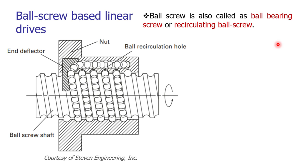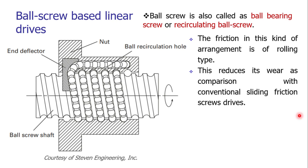Ball screw based linear drives are also called ball bearing screws or recirculating ball screws. In a typical screw and nut arrangement, we have sliding friction, which reduces efficiency. If we replace that sliding friction with rolling friction, we can enhance efficiency. For this purpose, we use the ball bearing screw concept to achieve higher mechanical efficiency.